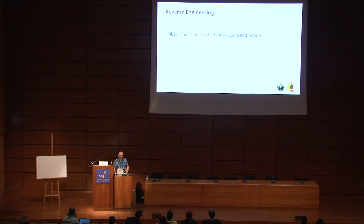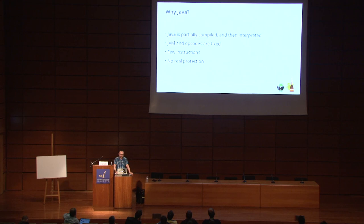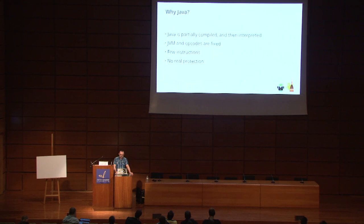Reverse engineering is defined as obtaining source code from a compiled binary. When working with our Android application, we work with our SDK, traditionally Android Studio. We compile into an APK, and reverse engineering is the process of going back to the source code. Why Java? Java is partially compiled and then interpreted. The number of opcodes in the Java Virtual Machine are fixed — they cannot be extended, and it's a very limited number of instructions. There is no real protection against Java decompilation.